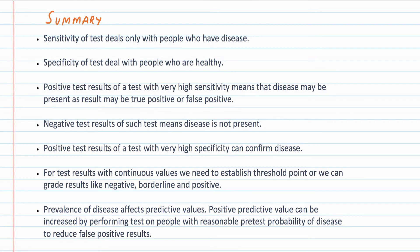We know sensitivity of a test deals with people who have disease. So if the result of a very sensitive test is negative, this means the person doesn't have the disease. Similarly, specificity of a test deals with people who are healthy. So if the result of a test with very high specificity is positive, it means the person is not healthy and has disease.